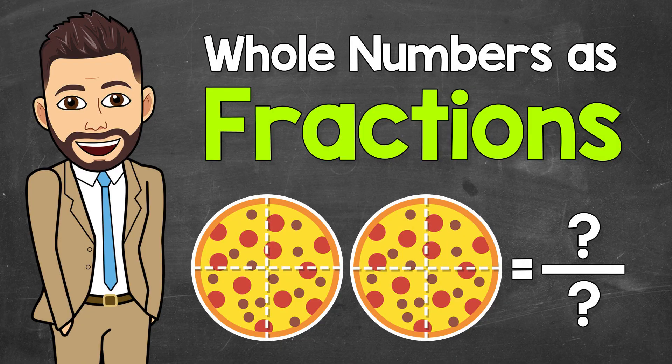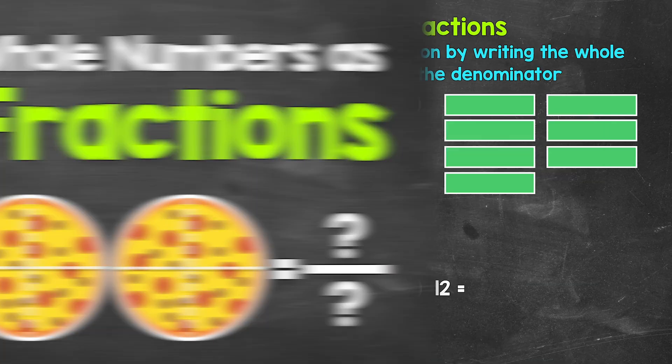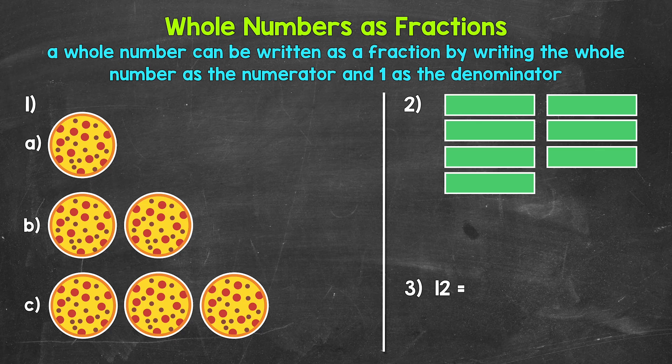Welcome to Math with Mr. J. In this video, I'm going to cover how to write whole numbers as fractions. The most simple and basic way to do this is we can write any whole number as a fraction by writing the whole number as the numerator and 1 as the denominator. So we just write the whole number over 1, and it's as simple as that. Let's jump into number 1 and see what this looks like and how this works.